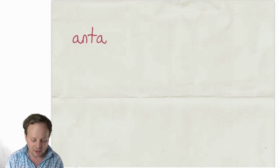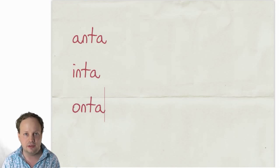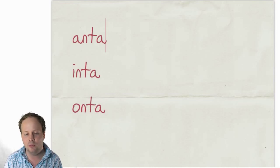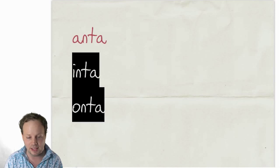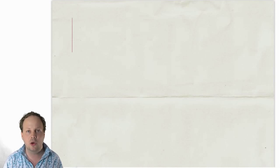You use the forms ANTA, INTA, ONTA in active. You're probably looking at that going, what does that mean? Well, ANTA is active present tense, INTA is active past tense, and ONTA is active future tense. That's probably the best way to explain it.